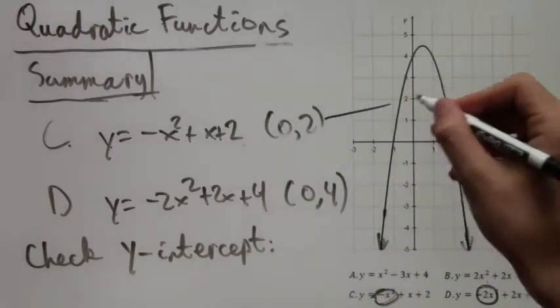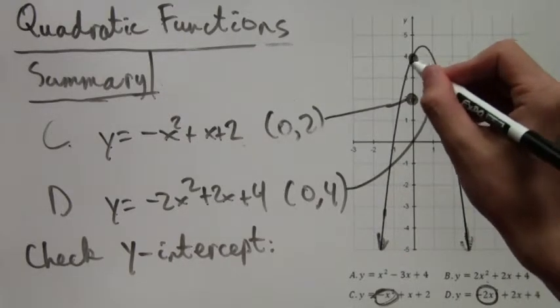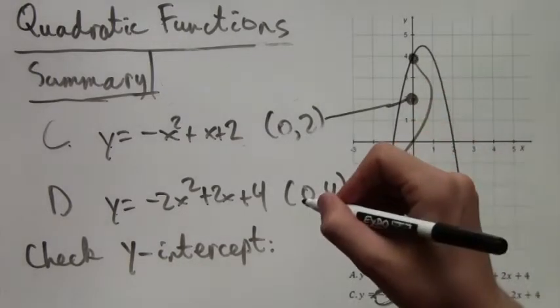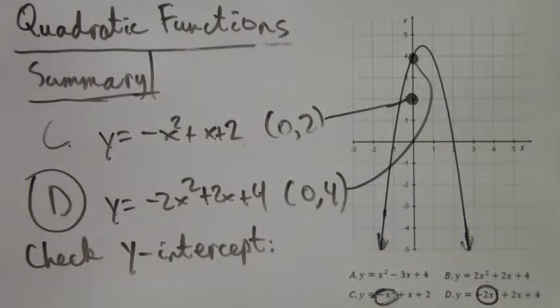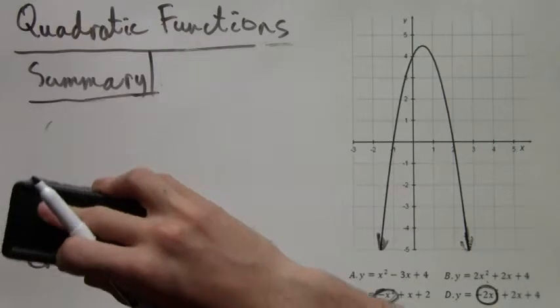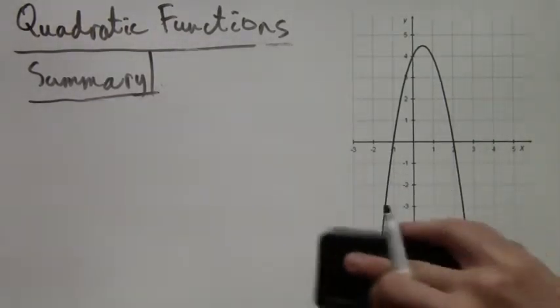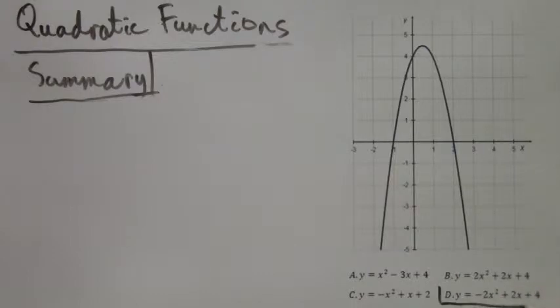So if we graph these points on the coordinate plane we see that (0,4) lies on the parabola while (0,2) does not lie on the parabola. That means that the parabola would have to be answer choice D. So now we have the correct answer. The correct answer is answer choice D.